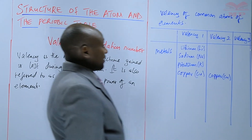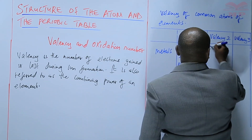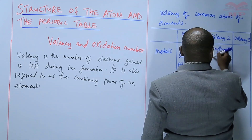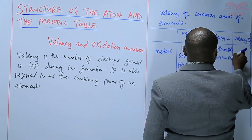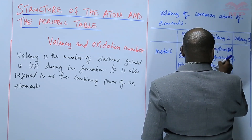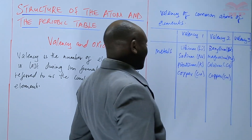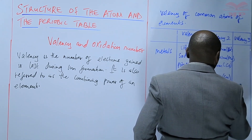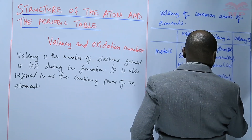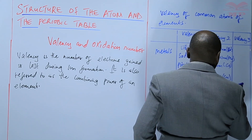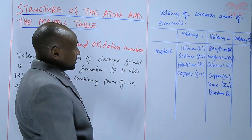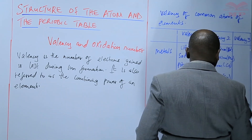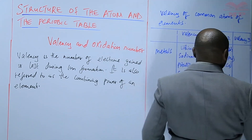For metals with a valency of 2, we have beryllium (Be), magnesium (Mg), and calcium. We also have transition metals like zinc and barium, and so on. Even iron has a valency of 2, although iron can also have a valency of 3.